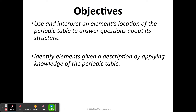We should be able to use and interpret an element's location on the periodic table to answer questions about its structure — its atomic structure, protons, neutrons, and electrons. We also need to be able to identify elements given a description by applying knowledge of the periodic table. Okay, so let's get started.